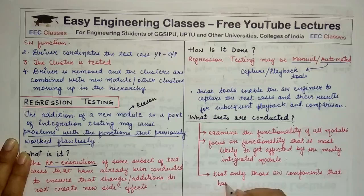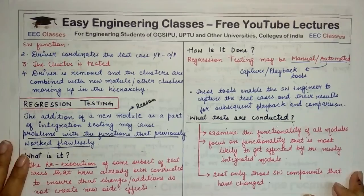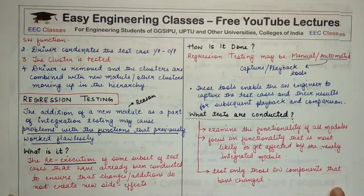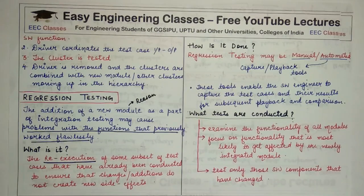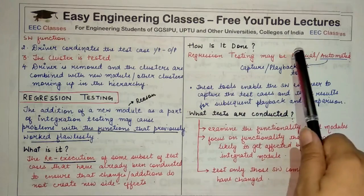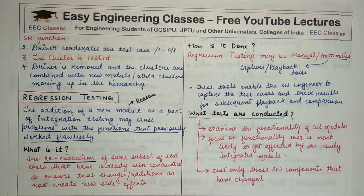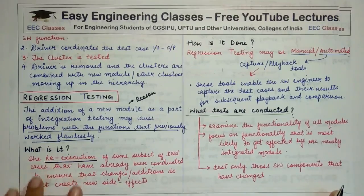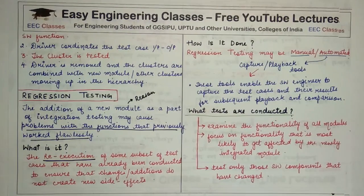This is all about regression testing. It is not a very difficult concept to understand. You just need to understand why regression testing is done and what is actually happening. Why? So that previously correct functionality also remains correct after adding new modules. When? At the time of integration, whenever a new module is added. How? Either manually or automated via capture/playback tools, which allow the software engineer to capture previous test cases and their results for playback.